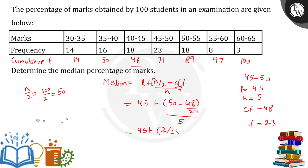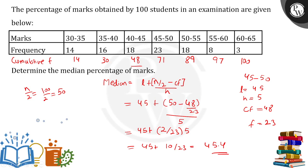Doing the calculation: 50 − 48 = 2, so we get 45 + (2/23) × 5 = 45 + 10/23, which gives us 45.4. That is our final answer — the median is 45.4. Just apply the formula carefully and make sure all the terms are used correctly. I hope you have clarity on each term used.